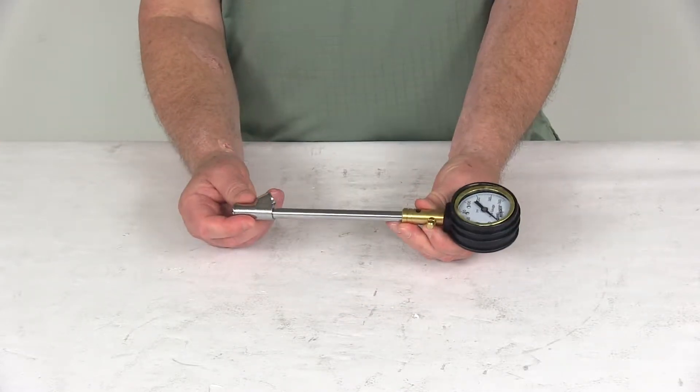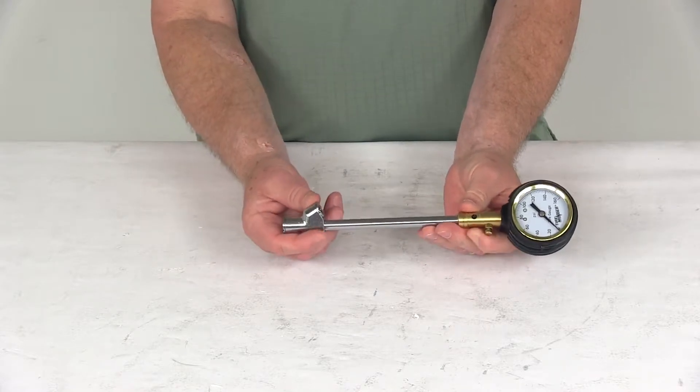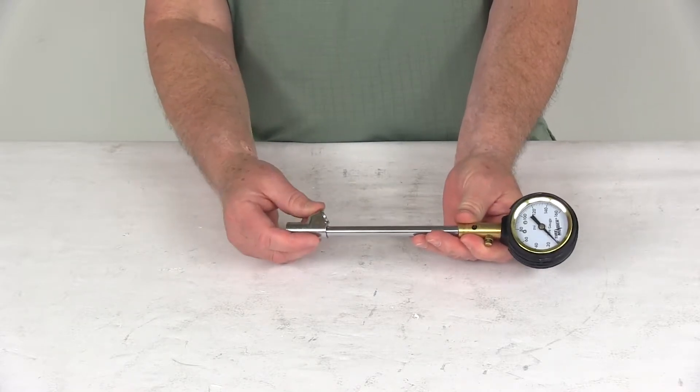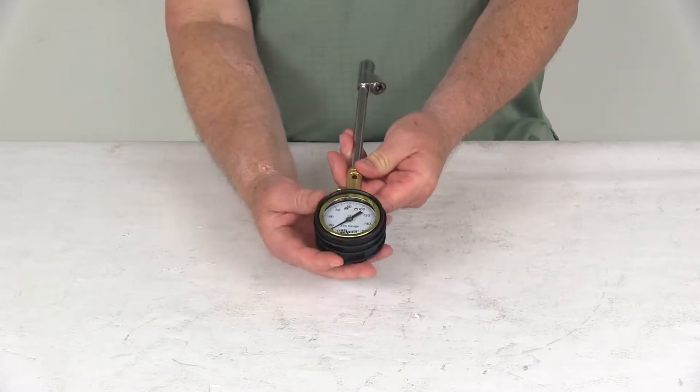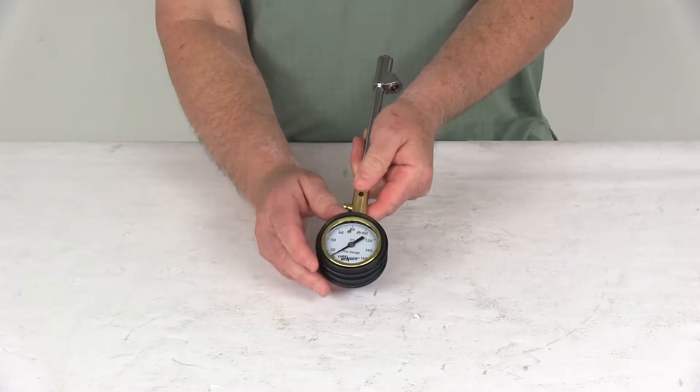It has a nice all-metal construction. The top features a dual head design for easy access to both inward and outward facing valve stems, and has a rubber protected dial gauge to read your pressure.